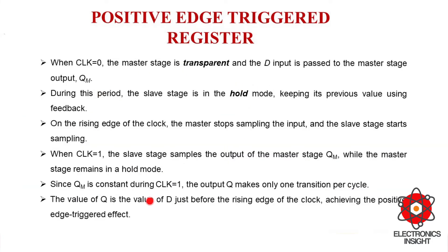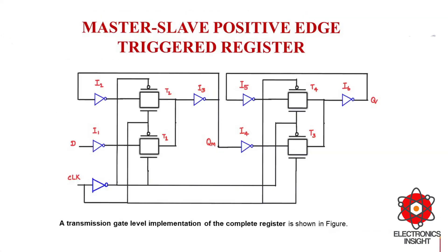The detailed discussion points of the positive edge-triggered register based on a master-slave configuration using multiplexers are given here. Now, similarly, using the same positive edge-triggered register concept on a master-slave configuration, we will try to implement it using transmission gates. The concept remains the same — the only difference is the usage of transmission gates instead of multiplexers.